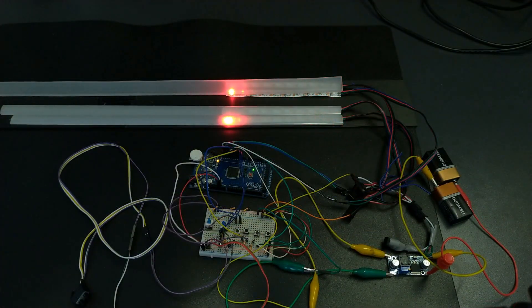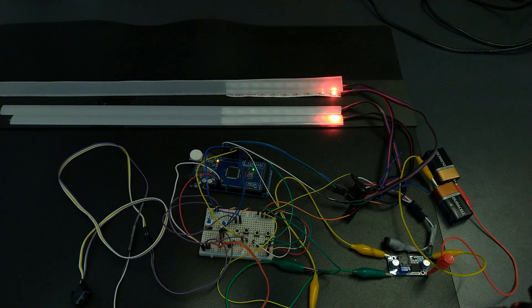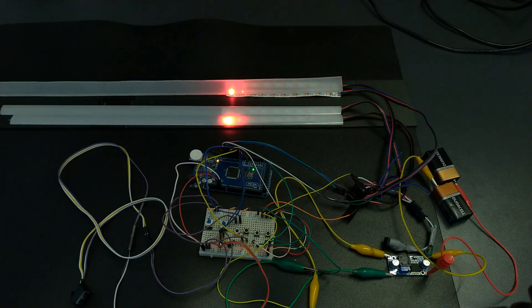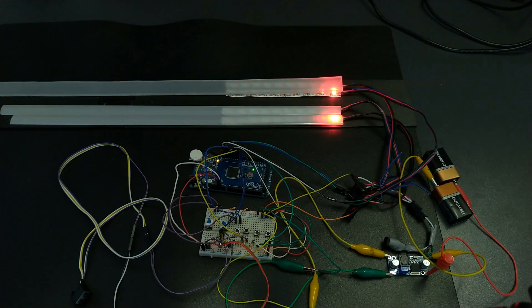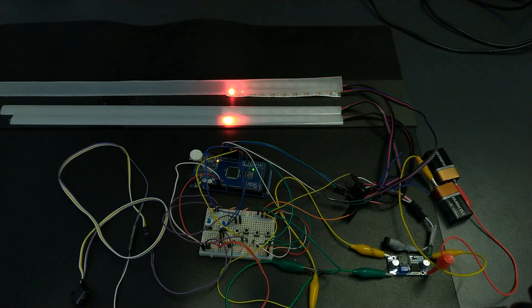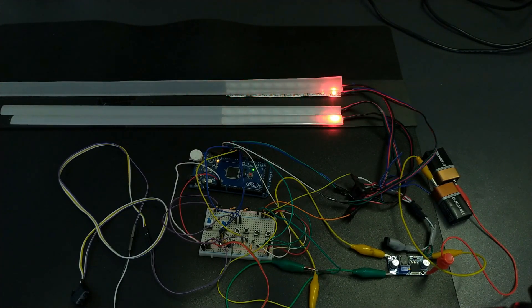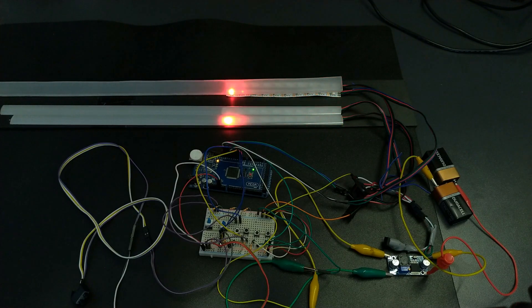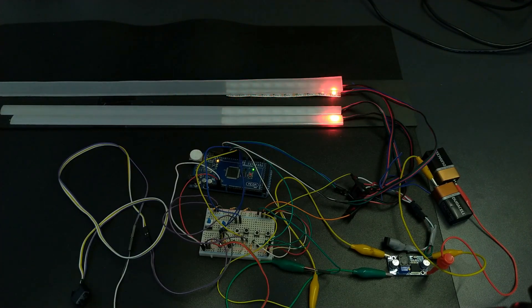As in the previous version, details and download link are in the description. You can customize everything in the code, timings, colors, the patterns for tail lights. And everything is commented out so it should be very easy. I think this is the coolest version of them all. Until now.